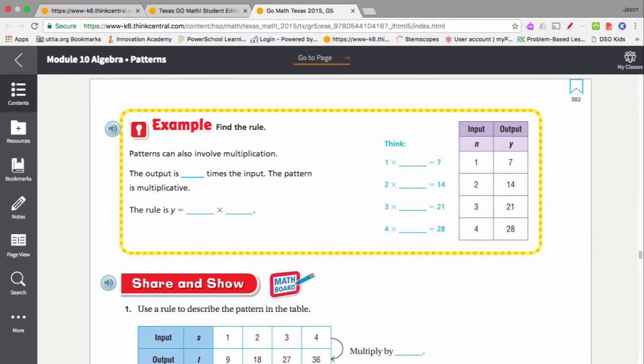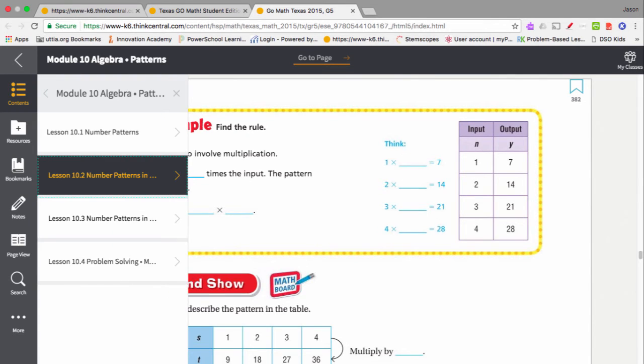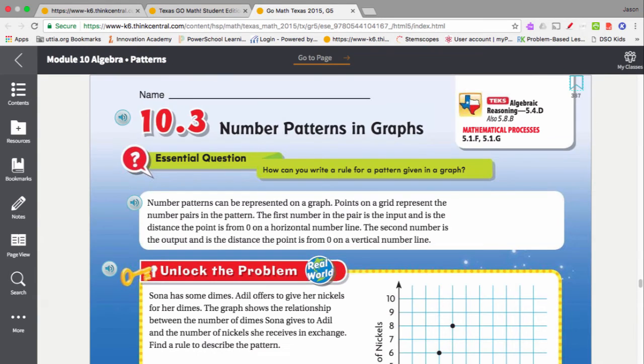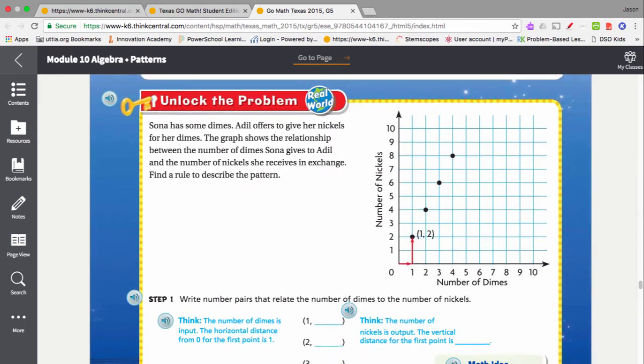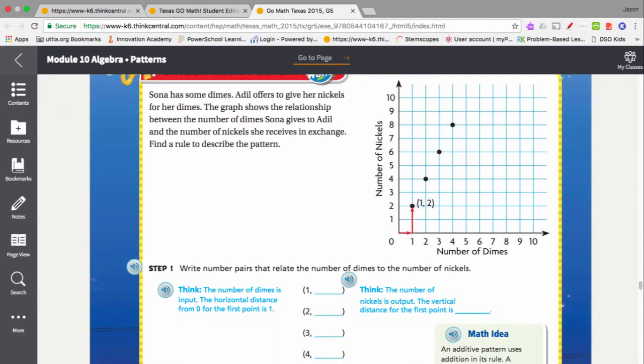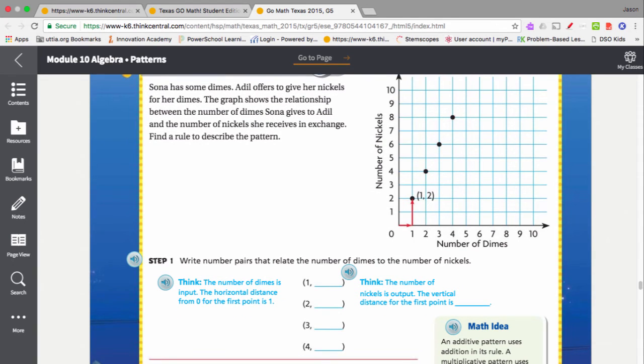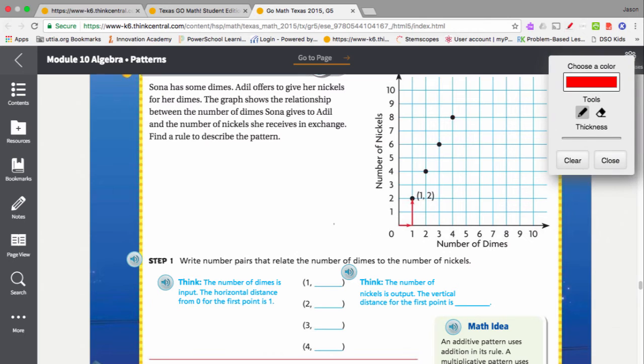Now, the other way that we can identify patterns is in a graph. You remember back to our constellation project that we did. We looked at how we plot points on graphs. So here's a graph with a pattern involved. And I want us to look at it.